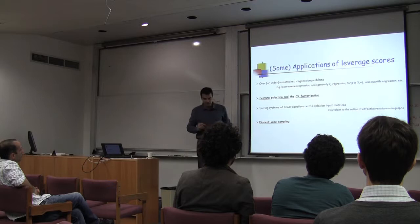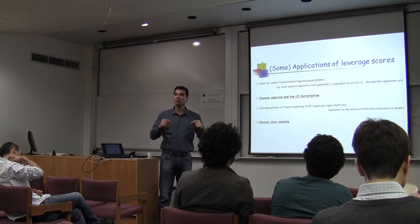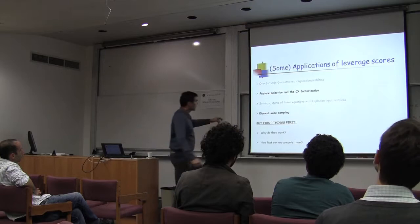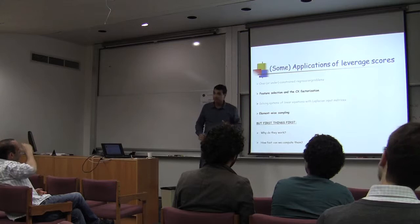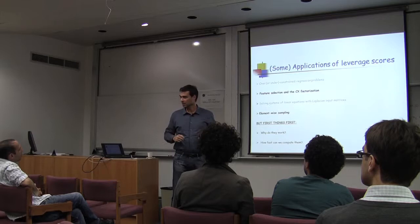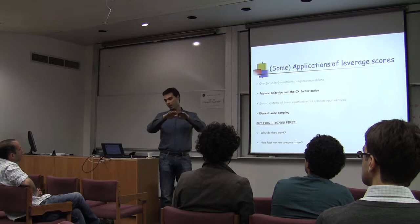Recently, within the past six months, papers have started appearing defining element-wise leverage scores. So far I defined leverage scores for rows and columns — can you do something similar for elements? The answer is yes. For SNP data, for instance, you'd like to identify particular combinations of sample and SNP that are especially influential for the matrix, giving finer control than just a whole sample or whole SNP.